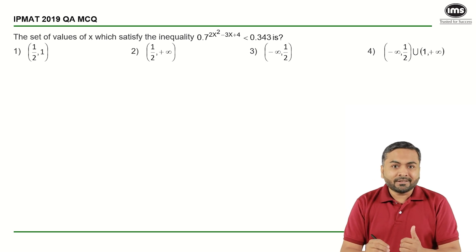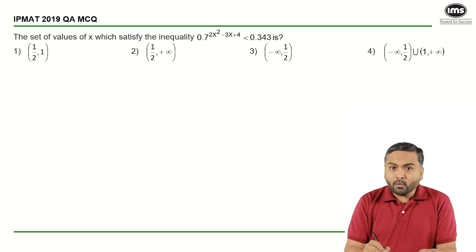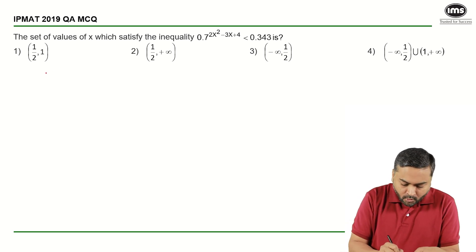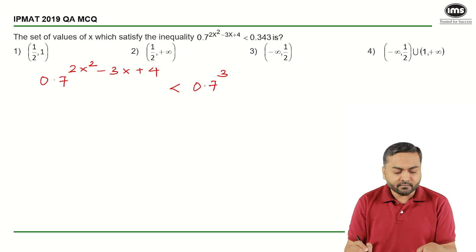Now if you know that 343 is nothing but 7 cubed, I can write down this as 0.7 raised to the given equation, that is 2x² - 3x + 4, is less than or equal to 0.7 cube.